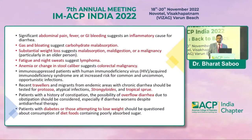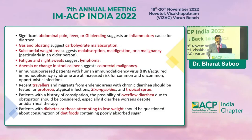It is very important to take a thorough history. Abdominal pain, fever, or GI bleeding can suggest an inflammatory cause. Gas and bloating can suggest carbohydrate malabsorption — even patients on metformin and acarbose complain of the same. Substantial weight loss can suggest malabsorption, maldigestion, or malignancy.